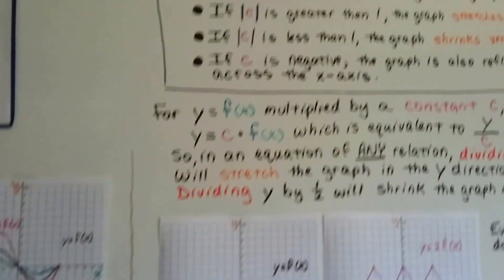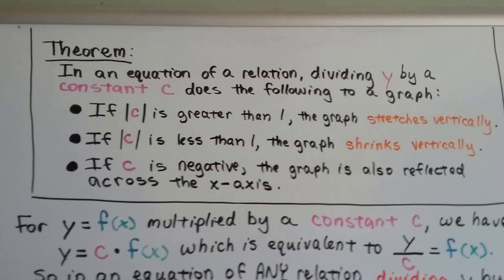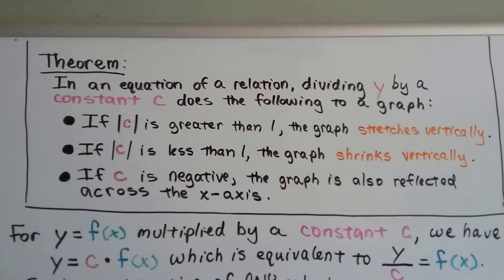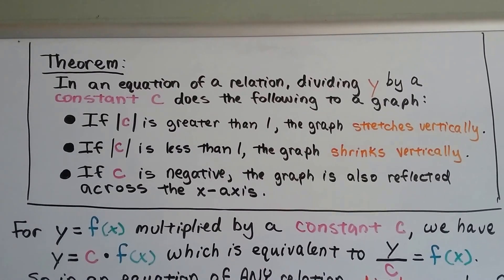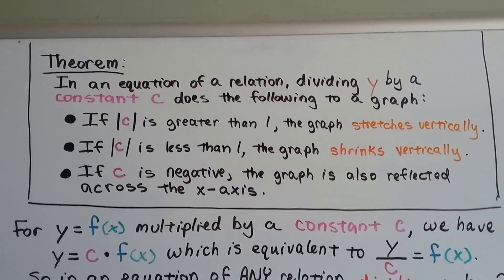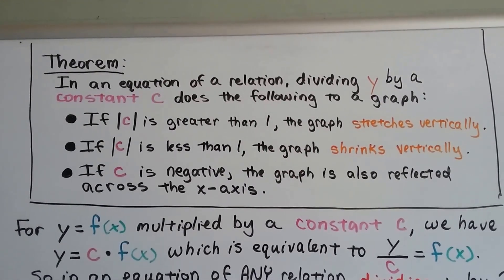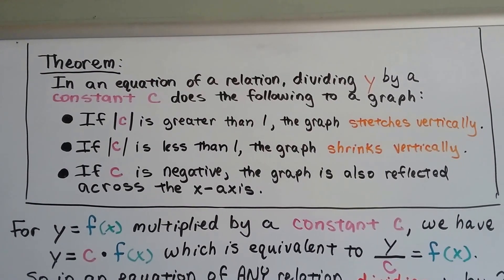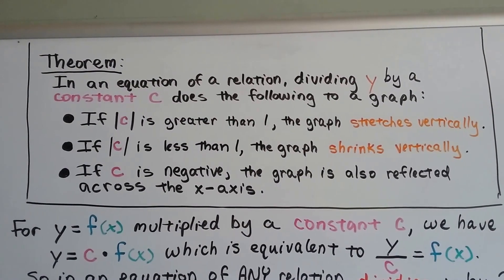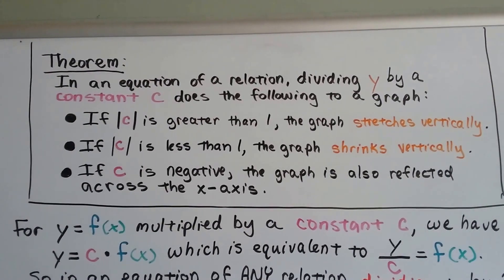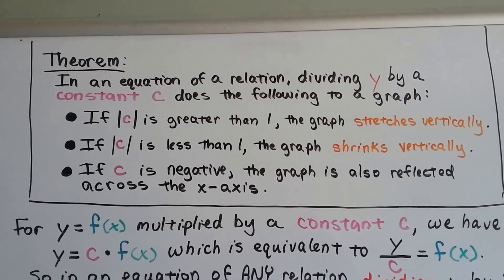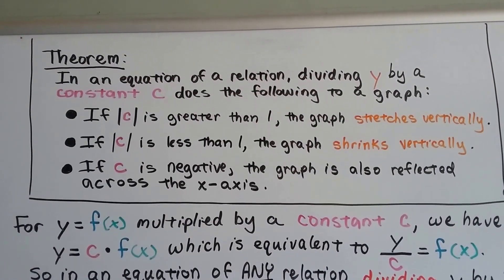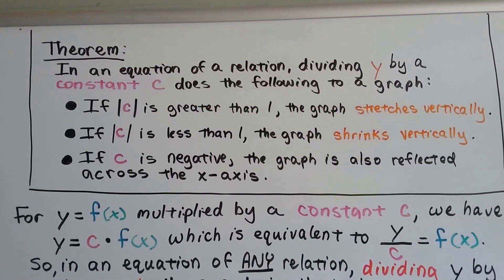So here is a theorem — basically what I've been saying. In an equation of a relation, dividing y by a constant c does the following to a graph: if the absolute value of c is greater than 1, the graph stretches vertically; if the absolute value of c is less than 1, the graph shrinks vertically; and if c is negative, the graph is also reflected across the x-axis.